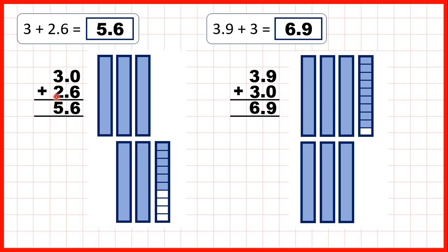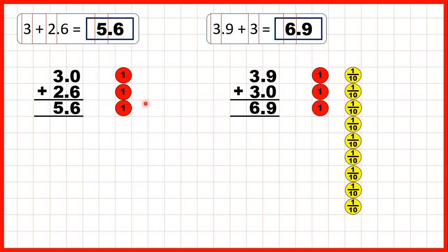We used the column method here, but if we understand place value we don't really need to use the column method for questions like this. For the first question, if we highlight our ones, we have three plus two, so that's five ones, and the point six stays the same. For this question, if we highlight the ones, we have three plus three, so that's six, and then the point nine stays the same.